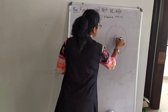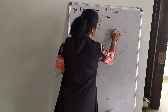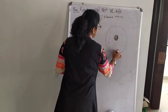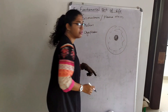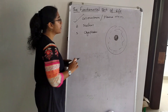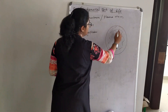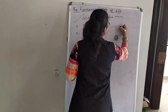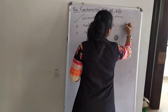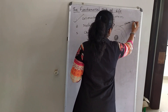Let me draw a cell. This is a cell. This is the nucleus of the cell — the main headquarter of the cell. It has a jelly-like structure which we call cytoplasm. The outer layer is known as cell membrane or plasma membrane.